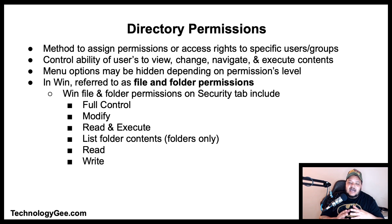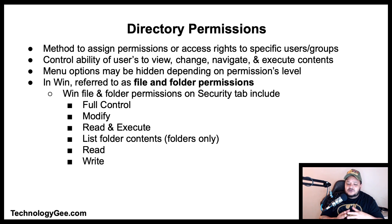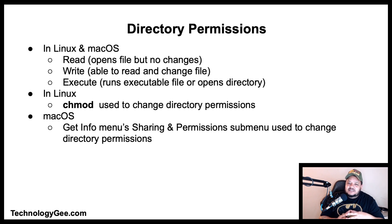Directory permissions: most file systems have methods to assign permissions or access rights to specific users and groups. These permissions control the ability of users to view, change, navigate, and execute the contents of the file system. In Windows, directory permissions are referred to as file and folder permissions, and include: full control, modify, read and execute, list folder contents (applies to folders only), read, and write.